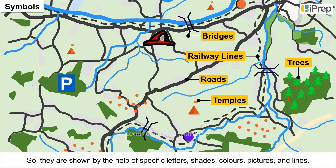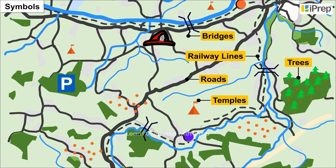So they are shown by the help of specific letters, shades, colours, pictures and lines. These symbols are universally accepted and easy to understand for anyone.